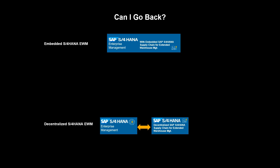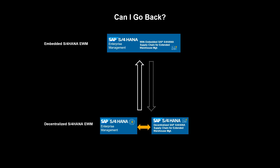Before we end this video, we would like to address a commonly asked question: can I go back? Let's assume you have implemented decentralized EWM and now want to change to embedded. Can you do it? The short answer is yes, and organizations that have done it already exist. They use decentralized as a step towards their target architecture, EWM embedded. The other way around — nothing is impossible, but this represents a slightly bumpier road. You can do it, but the effort would be higher.